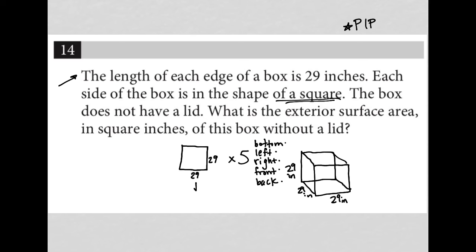Let's see, the area is 29 times 29, or 29 squared. So I'm going to my calculator: what is 29 squared? I get 841. And then I'm multiplying that by five because there are five sides, and I get 4205. So the answer here is 4205.